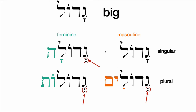To focus on what's encouraging here: when we learn a new adjective like gadol, we get to reuse each of these endings for the plural, for the feminine singular, and for the feminine plural. Let's do one more adjective.